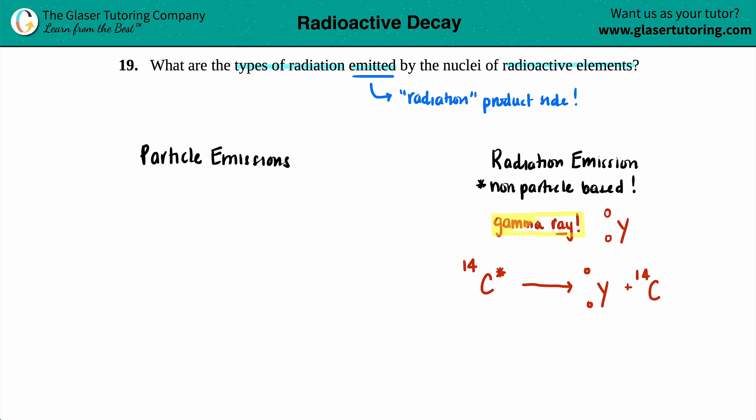Now let's go back and talk about all your particle emissions. And keep in mind that your emissions, that radioactive piece, has to be on the product side. So when we do all of our particle emissions, those types of radiation should be on the product side. Now there's a few of them.